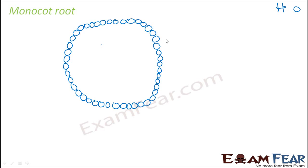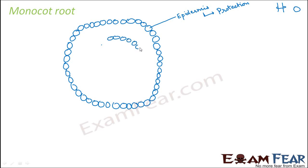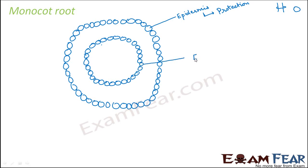The function of this epidermis is protection and to prevent water loss — that is the main function of the outermost layer. Now inside this epidermis there is another layer of cells which is termed as endodermis. Endo means within, so this is a layer similar to epidermis but present inside, and therefore it is known as endodermis.